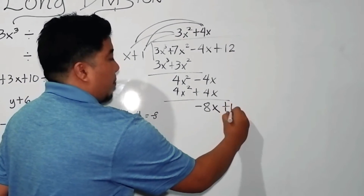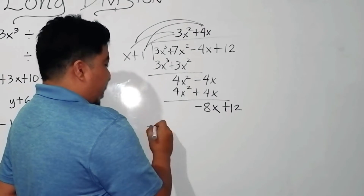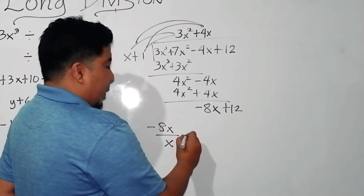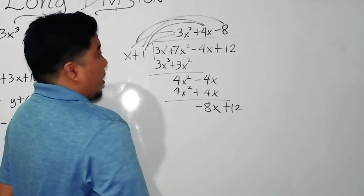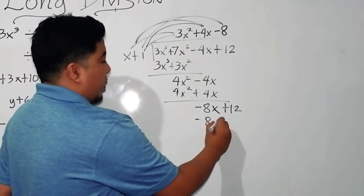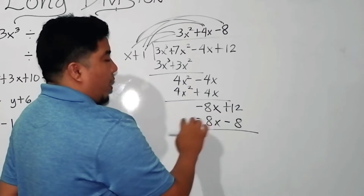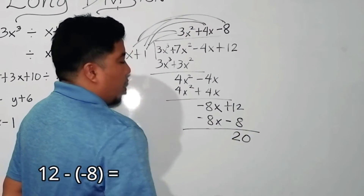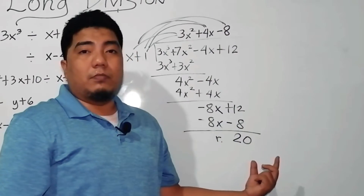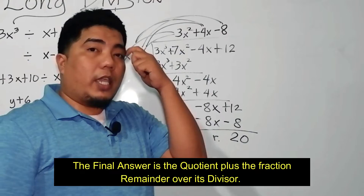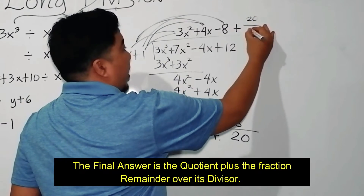Next, bring down the last term, which is 12. Same process: negative 8x divided by x equals negative 8. So negative 8 will be multiplied by your divisor: negative 8 times x is negative 8x; negative 8 times 1 is negative 8. If you subtract, this will be 0. 12 minus negative 8 — that is positive 20. This 20 will be your remainder since there is no additional term to bring down. The final answer is 3x squared plus 4x minus 8 plus 20 over (x plus 1).